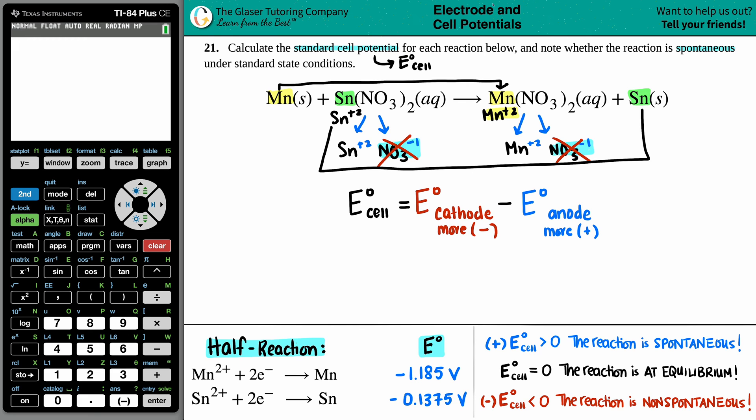So if we just do one of these, Mn, there was no charge in the upper right-hand corner. That's a zero. So I start off with a zero charge, and now I'm going to an Mn that was a plus two. Did I become more positive or did I become more negative? Yeah, I became more positive. So more positive is always the anode.